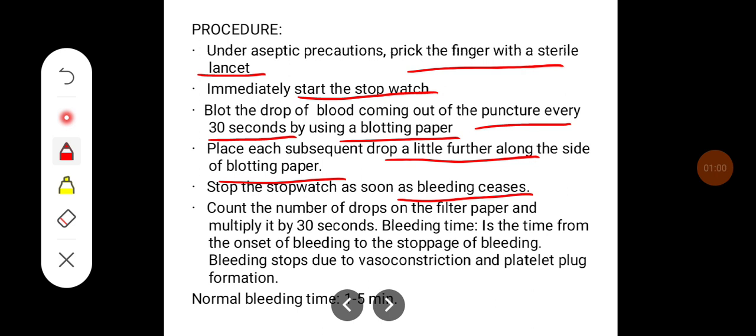Count the number of drops on filter paper and multiply it by 30 seconds. Bleeding time is defined as the time from the onset of bleeding to the stoppage of bleeding. Bleeding stops due to vasoconstriction and platelet plug formation. The normal bleeding time is 1 to 5 minutes.